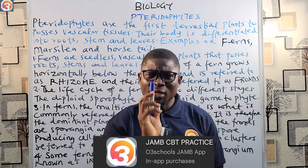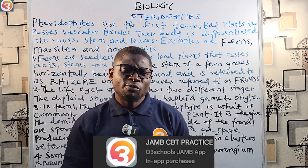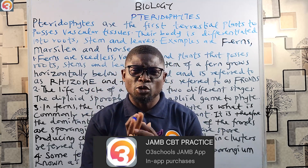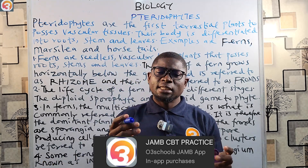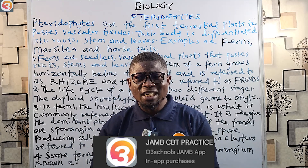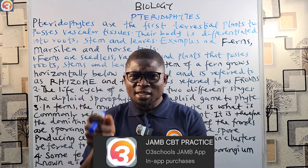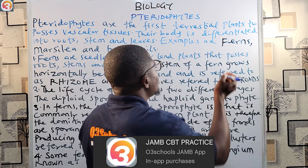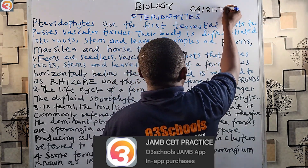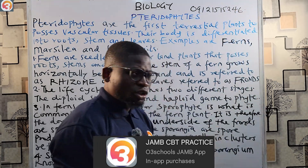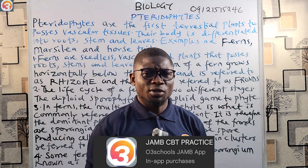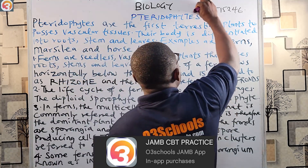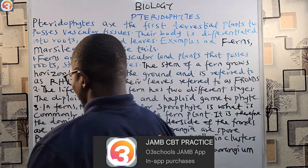After downloading the app from Play Store, click 'Buy Activation Key' at the top. You can pay by transfer or use your ATM card to pay online for automatic activation. If you make a transfer or pay through POS, send the receipt or teller to this WhatsApp number: 0912-1515246. Once you send the receipt, you get an immediate response and your app will be fully activated.